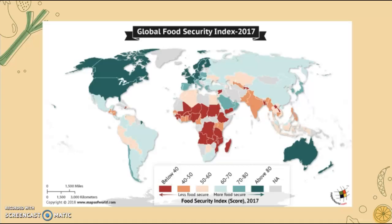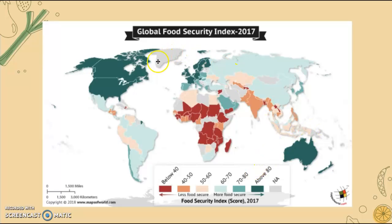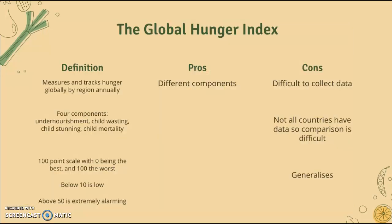Globally, the trend shows that countries that tend to score quite low — and low means worse — tend to be centralized around Africa, with some in Asia and a bit of South America. Countries with very high scores are in Australia, Europe, and North America.